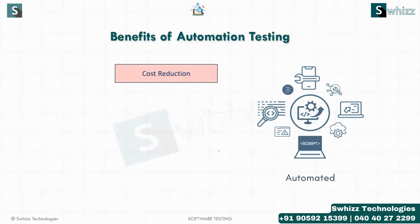For cost reduction, you don't need to recruit many manual testers. A single automation tester can do the execution of test cases equivalent to what five to six manual testers would do.